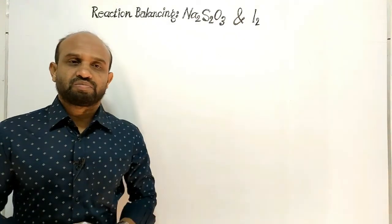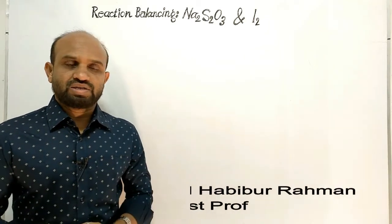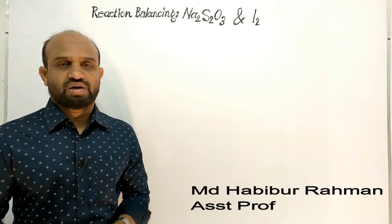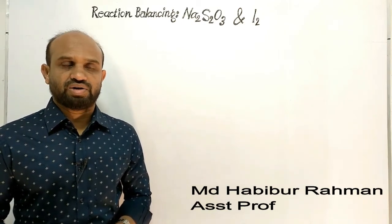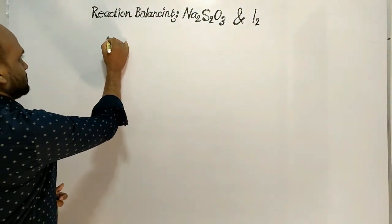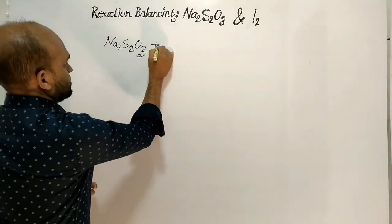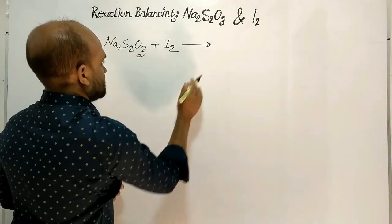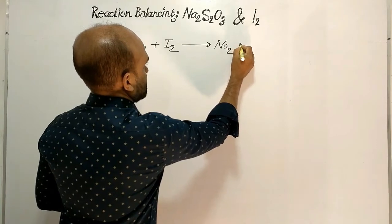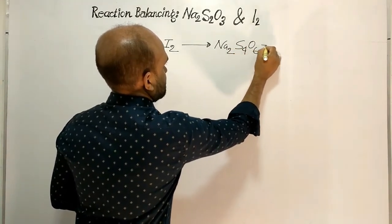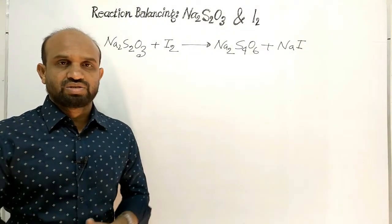Reaction balancing by ion electron method, also known as the redox reaction method. Today's reaction is between sodium thiosulphate and iodine. Let's write the reaction: sodium thiosulphate plus iodine gives sodium tetrathionate and sodium iodide. This reaction is to be balanced — that is today's topic.